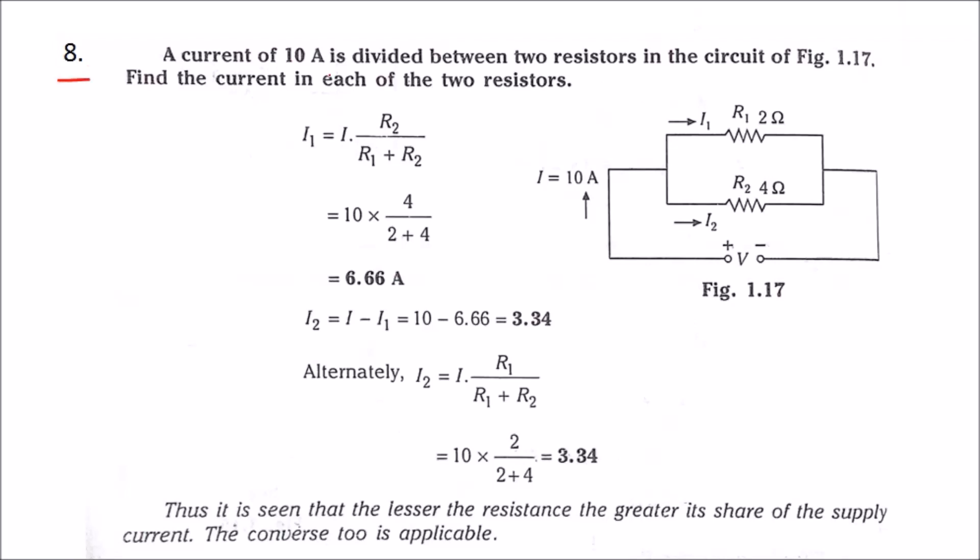Problem number 8: A current of 10 amps is divided between two resistors in the circuit of figure 1.17. Find the current in each of the two resistors. So here we need to find i1 and i2.